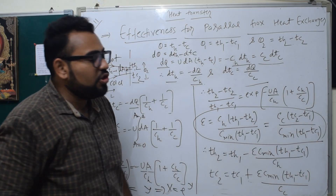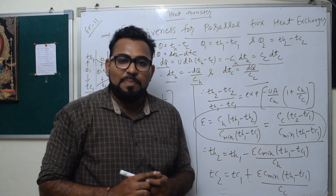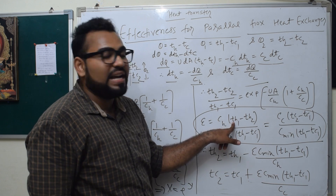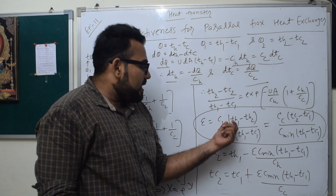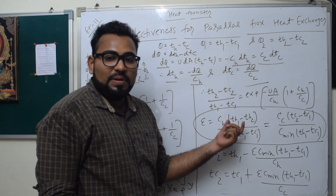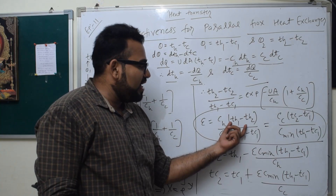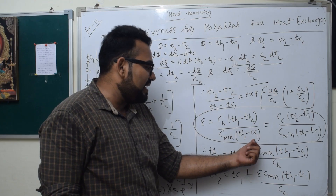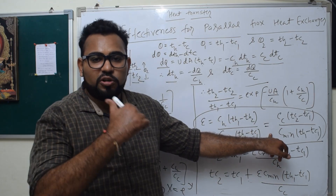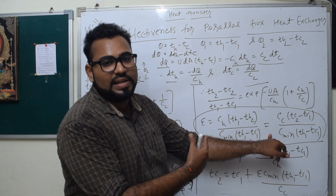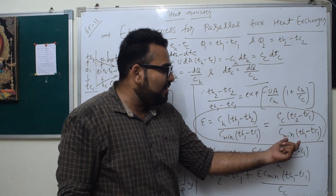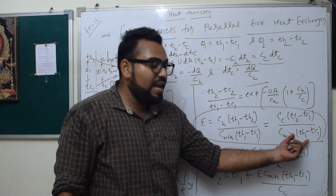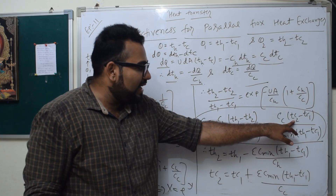This is episode number 10, where we understand the definition of effectiveness. Effectiveness epsilon is defined as Q divided by Q_max. Q is the actual heat transfer, and Q_max is the maximum possible heat transfer, which involves C_minimum times (Th1 minus Tc1). We can write the effectiveness expression for both the hot and cold fluid sides.